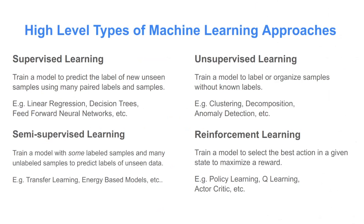Moving on to model selection — we have a few broad classes of machine learning approaches. There's supervised learning, where you train a model on paired samples and labels. You know what you want the model to predict, and you train it so that given one of these pairs, it can predict properly. Examples include linear regression, decision trees, and feedforward neural networks.